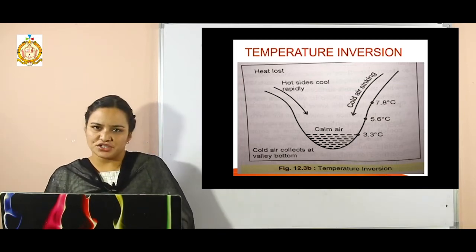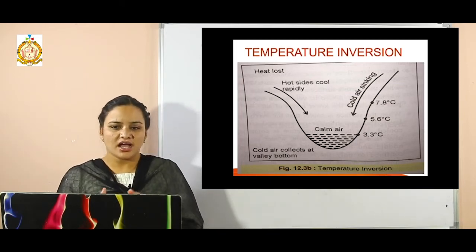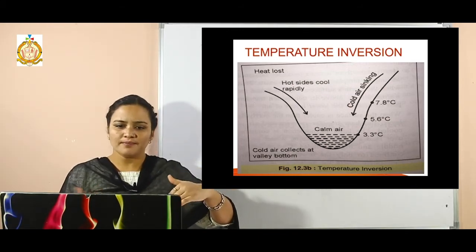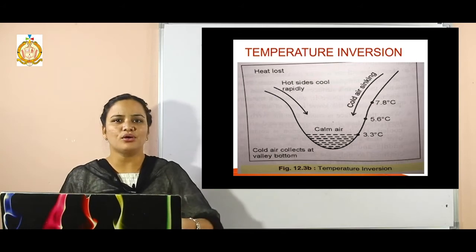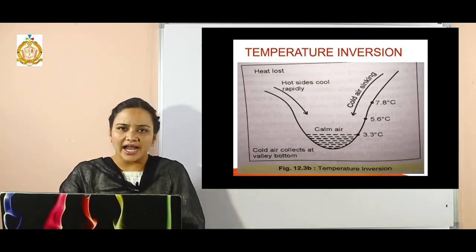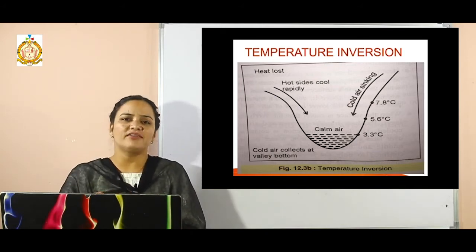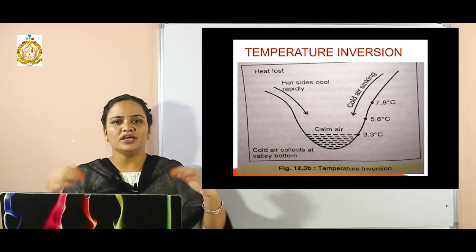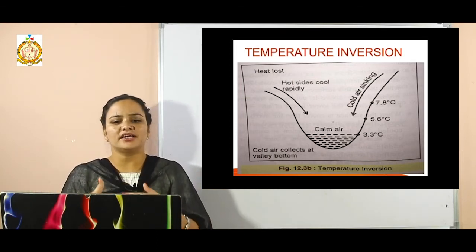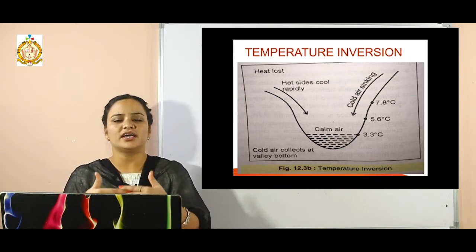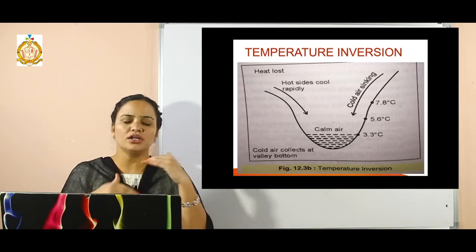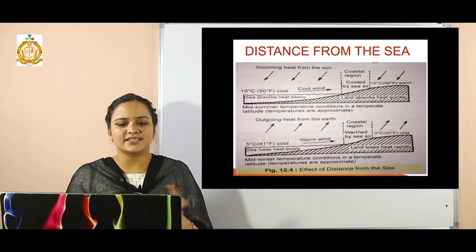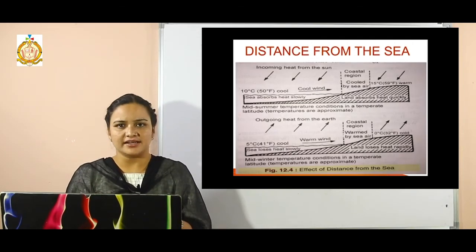The next topic is temperature inversion. Temperature fluctuates due to cold air and hot air. When they sink below the land surface, the air becomes calm — neither very cold nor very hot — as the air masses mix with each other. Cold air collects in the valley bottom in the center area.